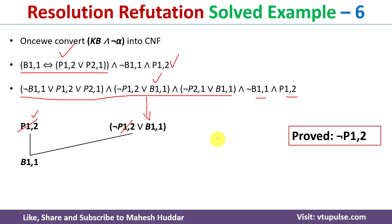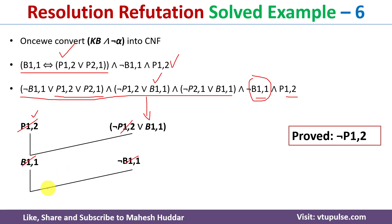Now B11 is remaining, so we need to select a clause that will lead us to null. We have B11 here, and negation of B11 is also present as a clause. Canceling B11 with negation of B11 gives us null. This shows that starting from the negation of the conclusion and reaching null means our assumption was wrong — negation of P1,2 is the correct and valid statement given the knowledge base.